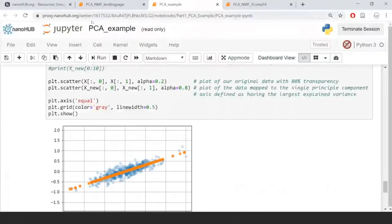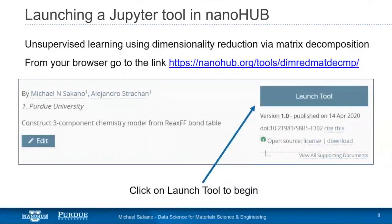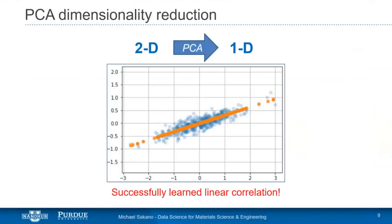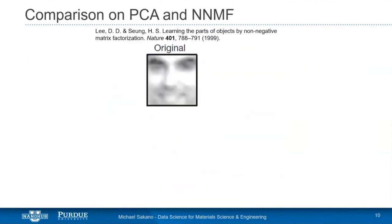Back to the slides: we applied PCA dimensionality reduction on two-dimensional data (normalized heights and normalized weights), projected onto one dimension, and put it back into the original space. We successfully learned the linear correlation. Now let's move to a real chemistry example, but first I'll go over what NMF does since we'll compare PCA and non-negative matrix factorization.